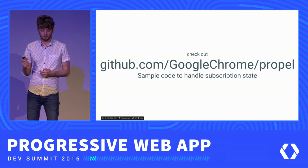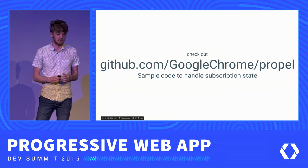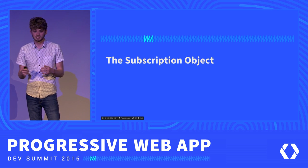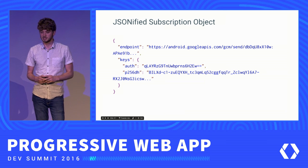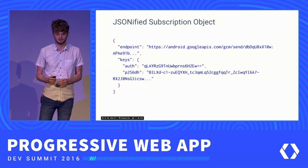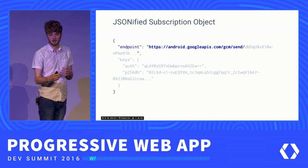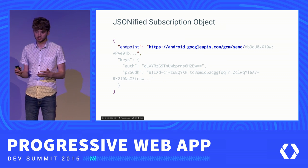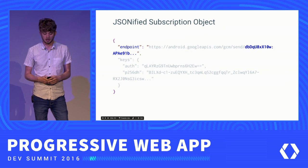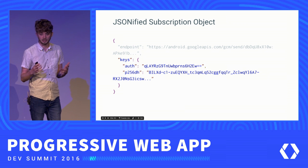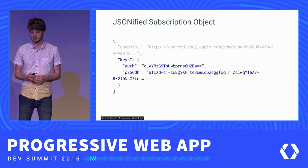I recommend checking out the Propel sample code on Google Chrome's GitHub section — it shows great sample code to manage subscription states with a nice API. Once subscribed, you get a subscription object containing all the information to identify the user to the push server so it can wake up the right device. It starts with an endpoint — a magic URL acting like a phone number for push notifications. It begins with the URL of the push service, in this case Google Cloud Messaging, followed by a long string identifying the current user. It also includes encryption keys so messages sent to the user's device are encrypted and can't be read by anyone in the middle.